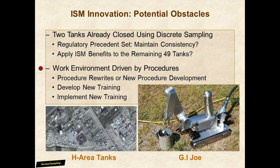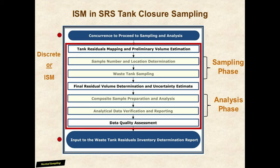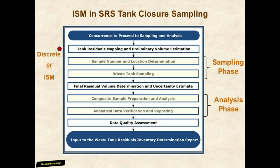There are both pre- and post-ISM portions to tank sampling. The blue bars at the top and bottom of this flowchart show these pre- and post-ISM activities. The top bar shows the agency's concurrence to proceed with tank sampling, and the bottom bar shows when DOE submits data to the residuals inventory report, with the ISM portion in between. Before tank sampling begins, operators perform a residuals mapping and volume estimation — performing a video survey to assess the amount of material on the tank floor and in the floor mounds, looking for coloration and particle size differences that could imply heterogeneities to be addressed during the ISM process.